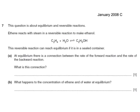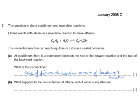Here's a past exam question about equilibrium and reversible reactions. Ethene reacts with steam in a reversible reaction to make ethanol. This reversible reaction can reach equilibrium if it's in a sealed container. At equilibrium, what is the connection between the rate of the forward reaction and the rate of the backward reaction? The rate of the forward reaction equals the rate of the backward reaction. And what happens to the concentration of ethene and of water at equilibrium? It remains constant — it doesn't change.